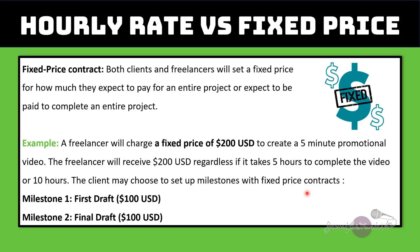With the hourly rate, a freelancer gets paid for every hour they're working on the project, so if it takes ten hours they get paid an hourly rate for each hour. But with a fixed price contract, it doesn't matter how many hours it takes — you are getting paid a specific fixed price to complete the entire project, and that includes all the revisions and everything.